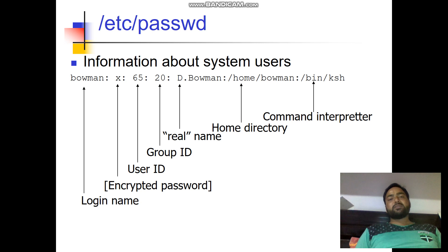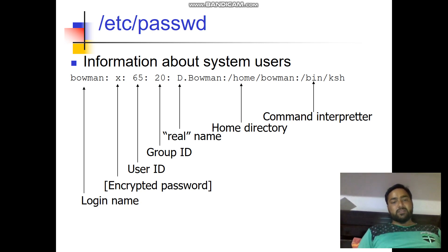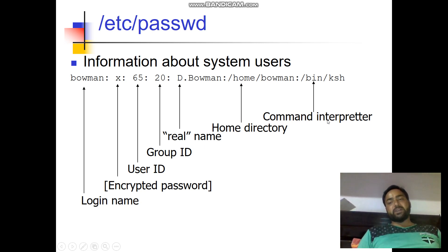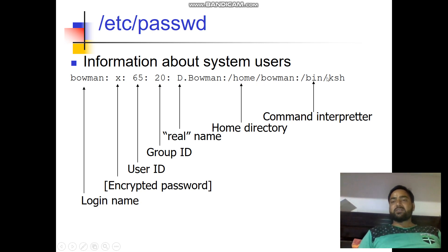The /etc/passwd file consists of information about system users. As you can see, there is information such as login name, encrypted password, user ID, group ID, real name of the user, home directory, and command interpreter through which commands are executed. For example: bowman:x:65:20:D.Bowman:/home/bowman:/bin/ksh — here 'bowman' is the login name.